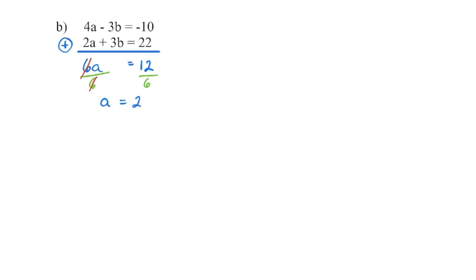Make sure that we add every term. So 4a plus 2a is 6a; negative 3 plus 3 is 0b, so that's gone; negative 10 plus 22 is 12. Then to get a isolated, I'm going to divide by 6, and a has a value of 2.